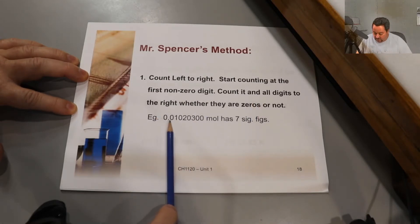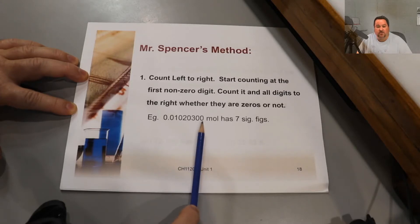So I wouldn't begin counting until I get to the first non-zero digit. Then I count it and all digits to the right, which means this measurement has seven significant figures. Remember, every measurement will have a unit as well. And if you don't have the unit with the correct abbreviation, it's not a measurement in engineering.